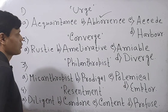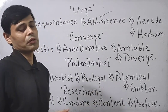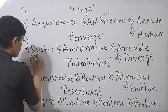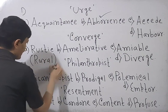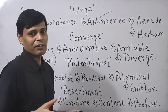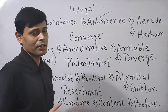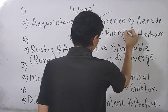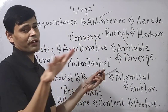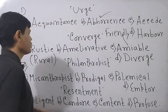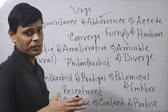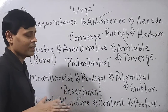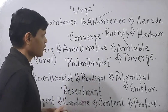The second question is 'Converge', which means meet at a particular point or assemble at a particular point. The options include Rustic, which means rural; Ameliorative, an adjective meaning developmental; and Amiable, which means friendly. Diverge means scatter in different directions. So Converge means assemble at a point — the opposite is scatter. Converge and Diverge are contrary to each other.